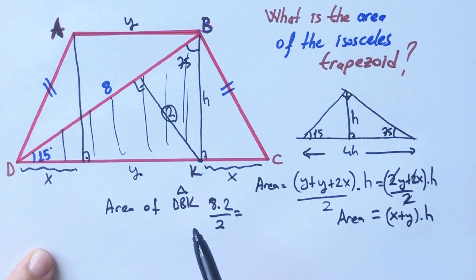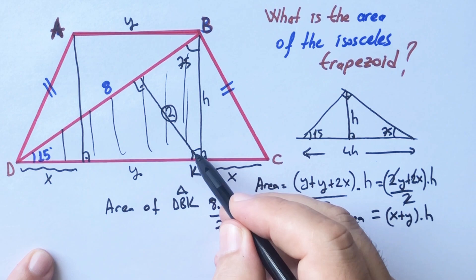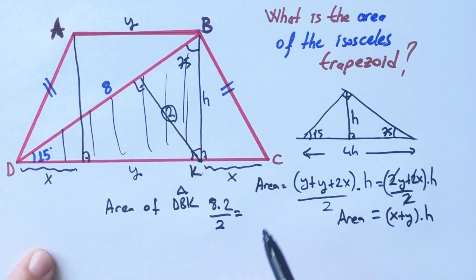So we can also calculate the area using this way: h times x plus y over 2, right?